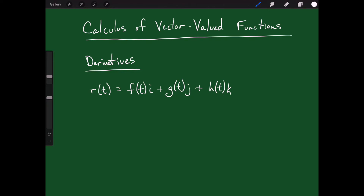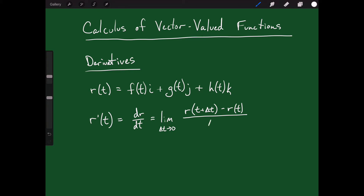A derivative in three dimensions is really just like a derivative in two dimensions, except in this case the independent variable is t — it's not x as we're used to. So we could talk about the derivative of r with respect to t, which we could call dr/dt. The derivative with respect to t, if we wanted to think about it as a limit, is the limit as delta t goes to zero of r(t + delta t) minus r(t), divided by delta t.